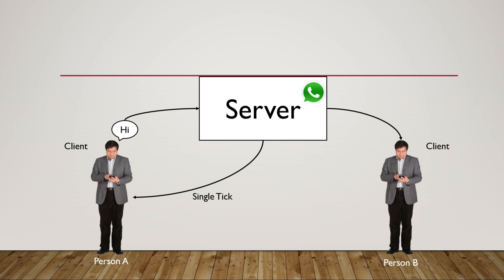Person A is the client, WhatsApp server is the server, and person B is also a client. When person B is not connected to the internet, the message is held at the WhatsApp server. As soon as person B connects to the internet, the WhatsApp server sends the message. Person B then informs the server that the message has been received, and the server responds to person A with a double tick. When person B sees the message, the server tells person A with a blue tick. Each device has its own IP address used to route the messages.